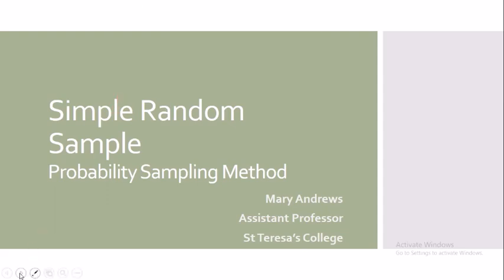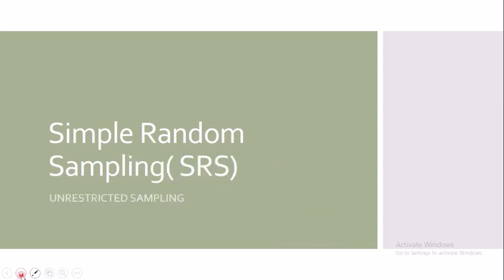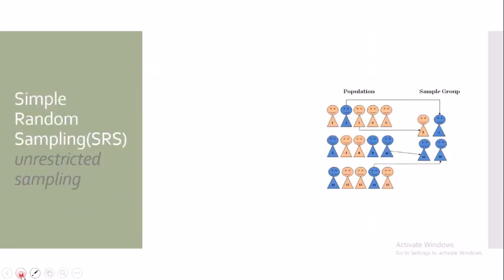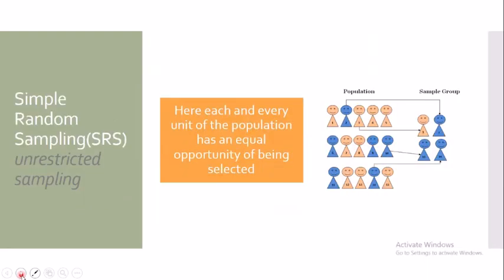We will be learning about simple random sampling, which comes under the probability sampling method. Simple random sampling is also termed as SRS and it is an unrestricted sampling method. Simple random sampling refers to that sampling technique in which each and every unit of the population has an equal opportunity of being selected in the sample. The items that get selected are just a matter of chance, and personal bias of an investigator does not influence the selection.